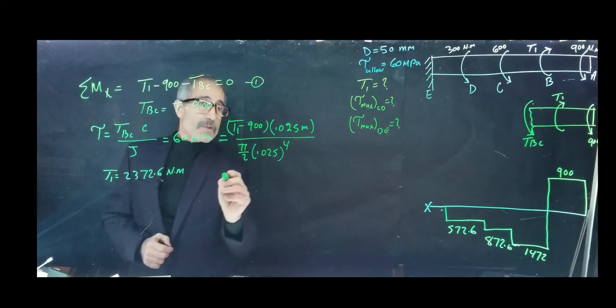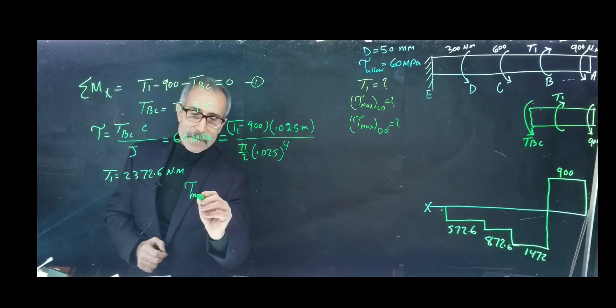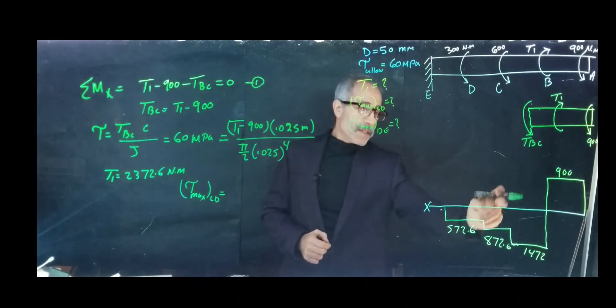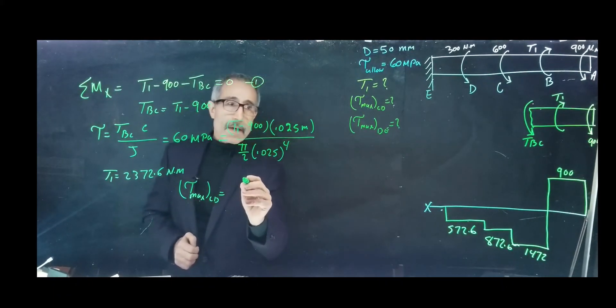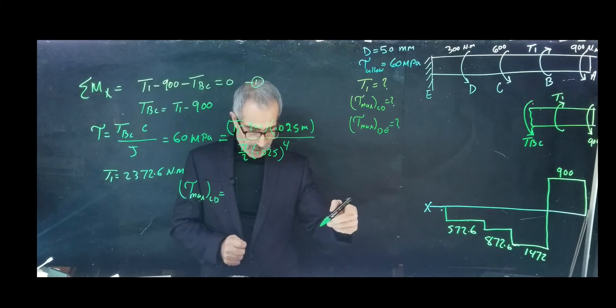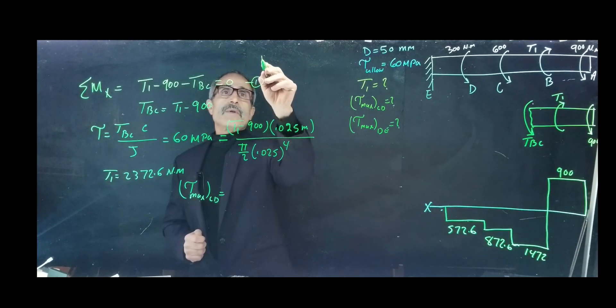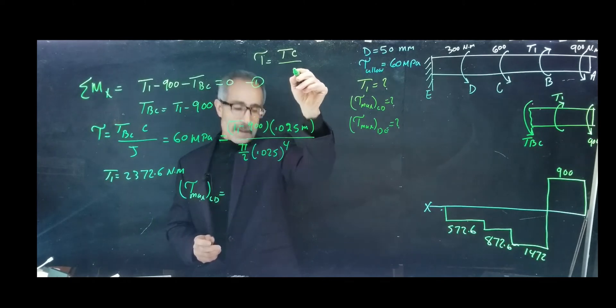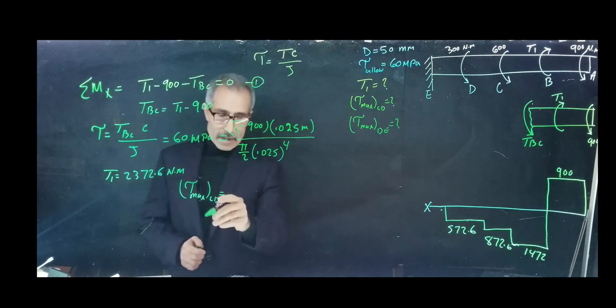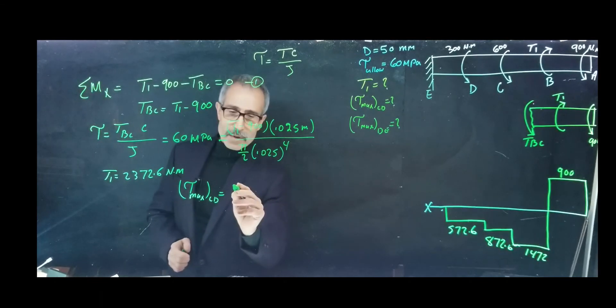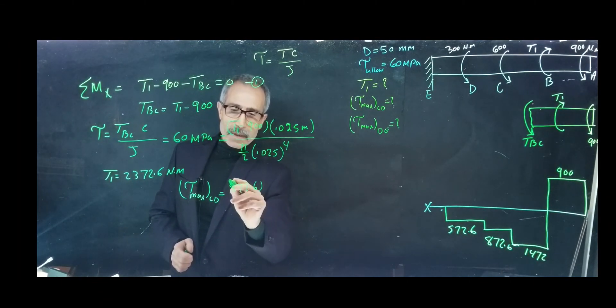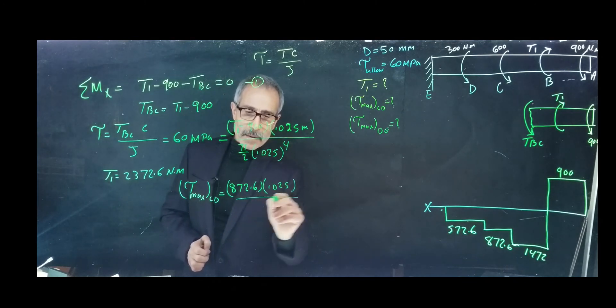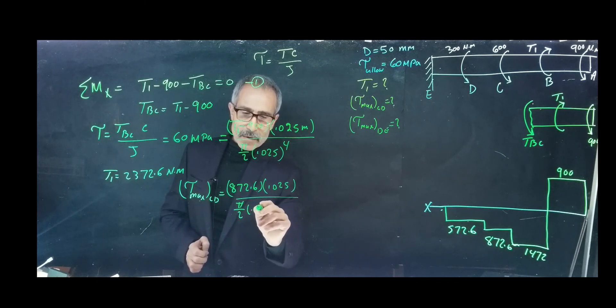Now we're going to calculate shear max at CD. CD is at 872.6. The equation is shear equals TC divided by J. We have T equals 872.6 multiplied by C, which is 0.025, divided by pi divided by 2 times 0.025 to the power of 4. That comes out to 35.5 megapascal.